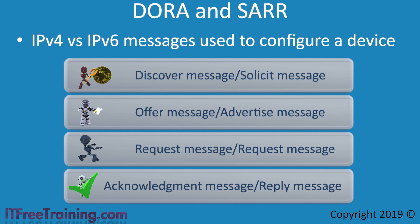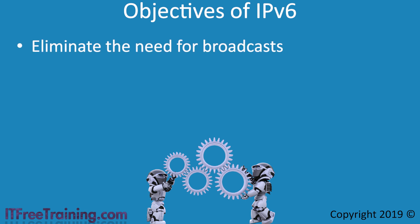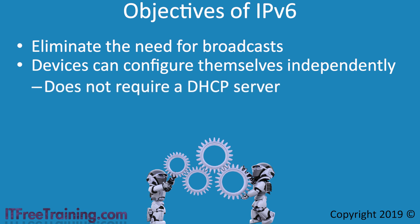I will first look at what IPv6 is trying to achieve. One of the main objectives of IPv6 was to eliminate the need for broadcasts. When DHCP is used with IPv4, at least two broadcasts are sent over the network to configure each device. The next objective was for devices to be able to configure themselves independently, that is, to configure themselves without requiring a DHCP server.